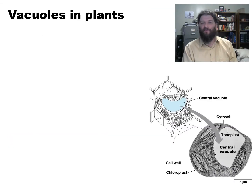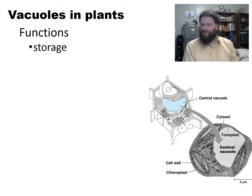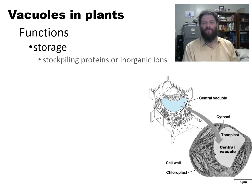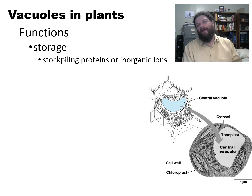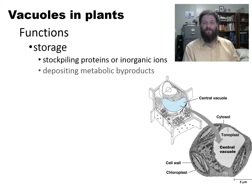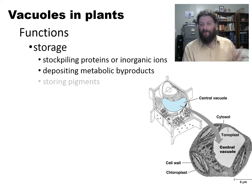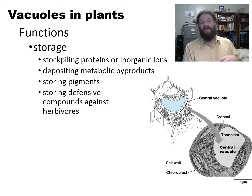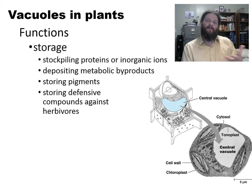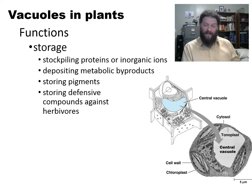Let's take some more time to talk about the vacuoles in plants and the function thereof. Its primary function is storage. This is where the plant is stockpiling lots of different proteins, such as pigments, inorganic ions, salt ions, and all kinds of other fun stuff. A lot of these are going to come from metabolic byproducts, but water is another metabolic byproduct and that gets in there too. Pigments get stored in there, as well as defensive compounds. Plants don't want to be eaten, and one way they prevent this is by making toxic compounds like nicotine. The nicotine in tobacco plants is actually made in the roots, but it is stored in the leaves in the central storage vacuole.